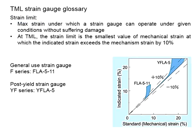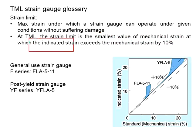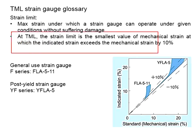Next, we talk about the strain limit. This refers to the maximum strain under which a strain gauge can operate under given conditions without suffering damage. Every strain gauge has its own limit. Beyond this limit, the strain gauge will be damaged and the result cannot represent the actual situation of the member. Based on the definitions of TML, the strain limit is defined as the smallest value of mechanical strain at which the indicated strain exceeds the mechanical strain by 10%.